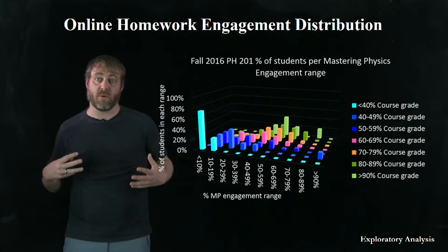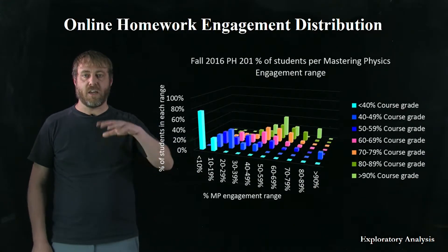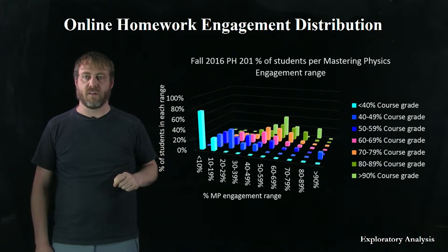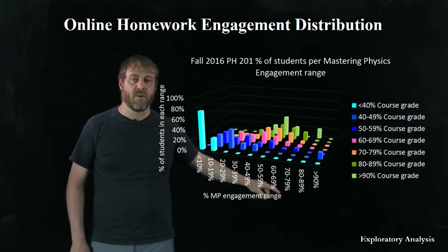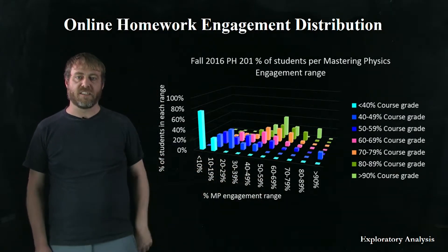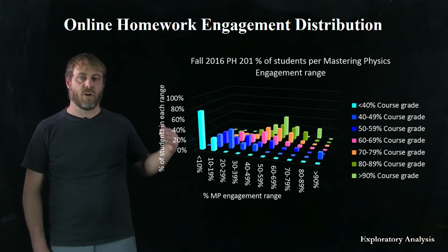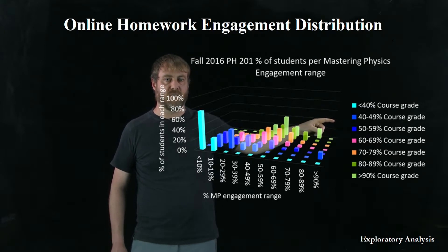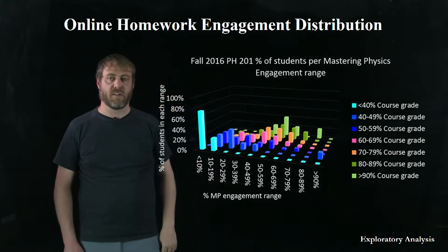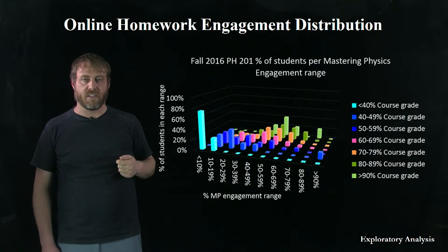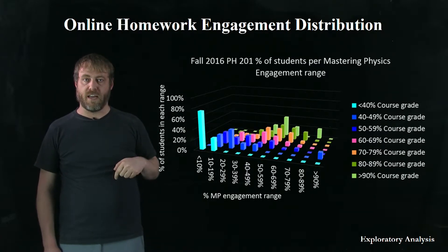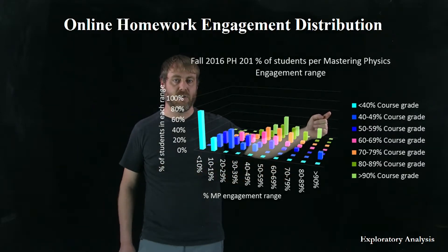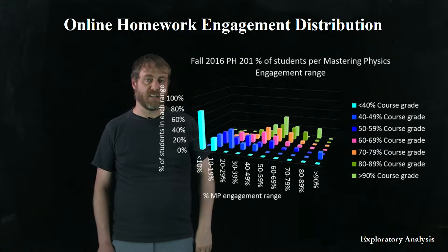So the next thing we want to do is can we look at Mastering Physics? What does the engagement distribution look like with that online homework? On the vertical axis, we have the percentage of students in each range. And on the horizontal axis, we have the percentage of Mastering Physics that the students actually engaged with. And as you go back deeper, you have the different grade groups. People got between 40 and 50, 50 and 60 in the different final course grades.